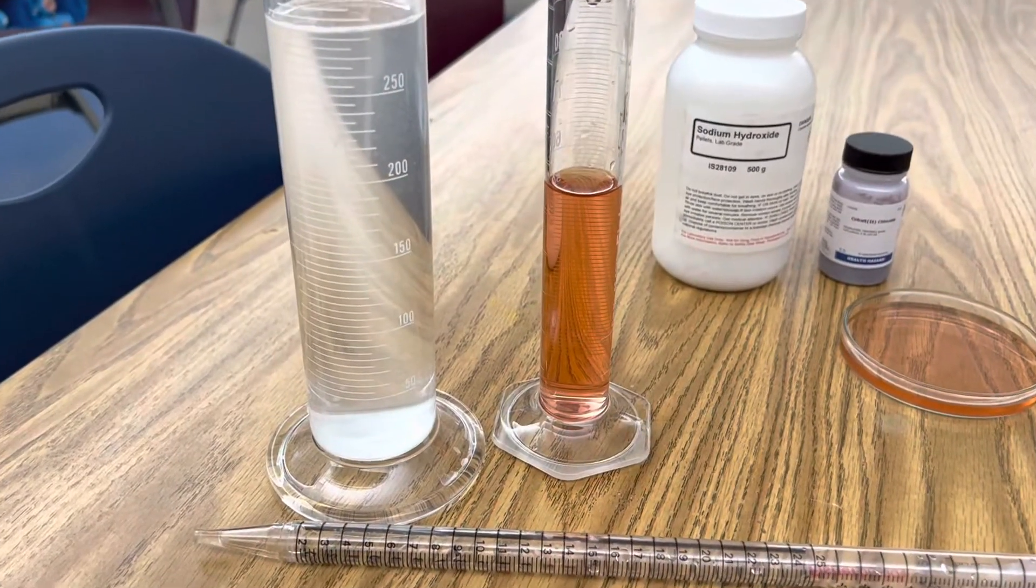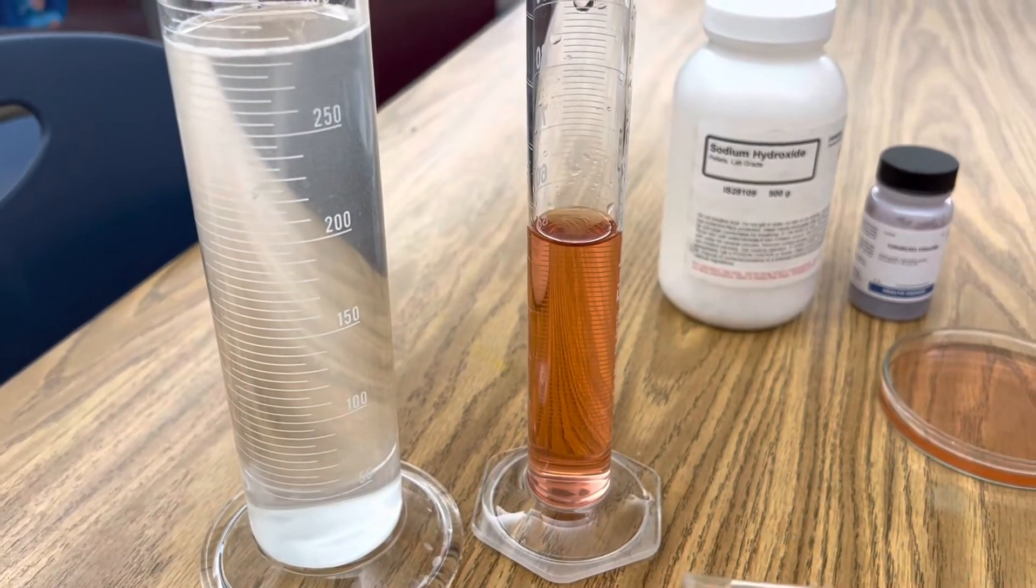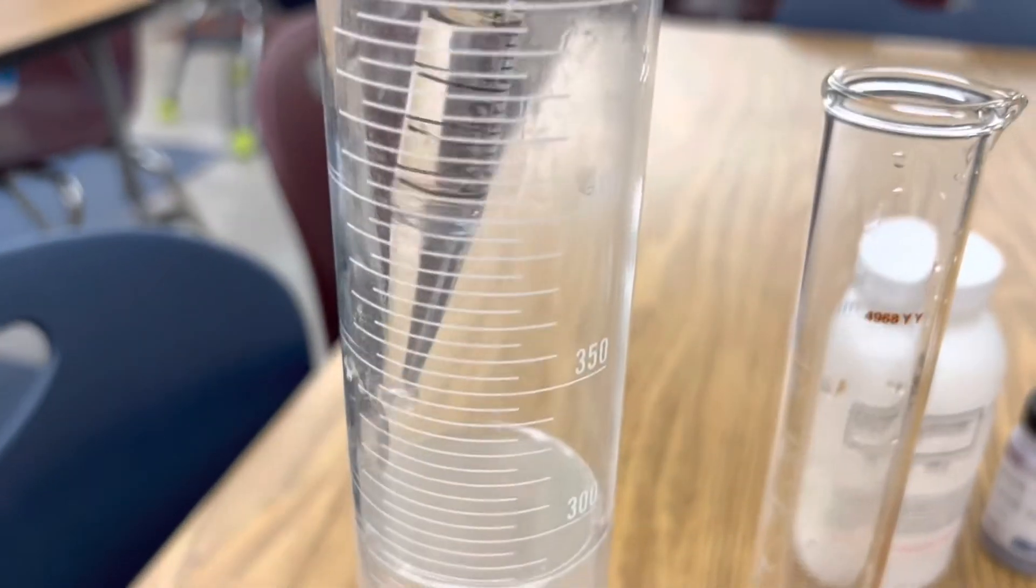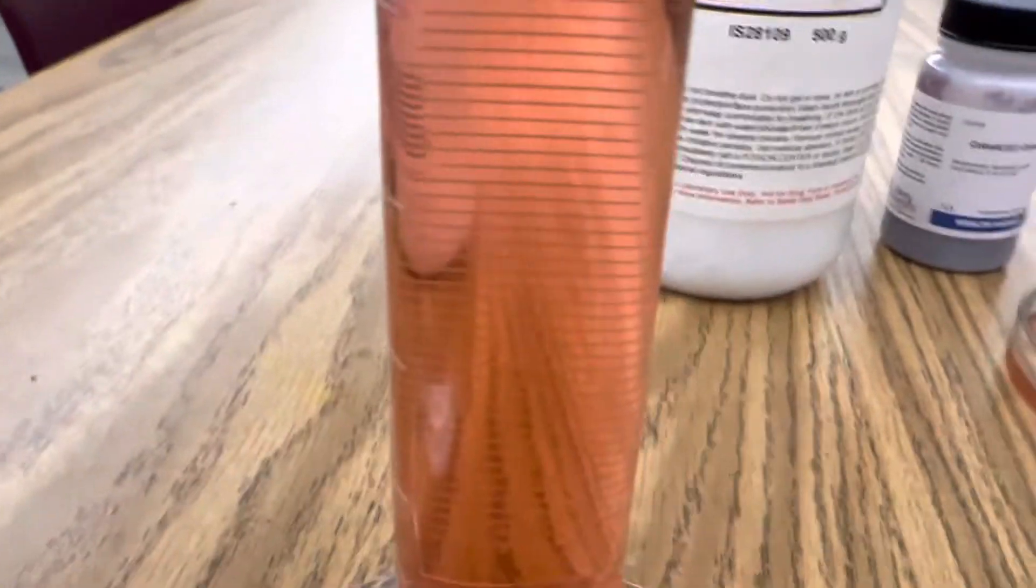Okay, now check out the amazing blue precipitation of cobalt hydroxide as I add sodium hydroxide, which you can see is clear, to my cobalt chloride solution. It's going to change really dramatically. Here we go.